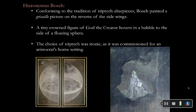On the closed triptych, we actually see an image of God the Creator hovering in a bubble. If we close the triptych, here's the closed version — we have God the Creator here in a bubble, with a little book in his hand and a crown. It's not super typical to actually see God the Creator represented; usually we'd see just his hand or something more abstract. There's also an inscription we'll talk about as we move inside the triptych.